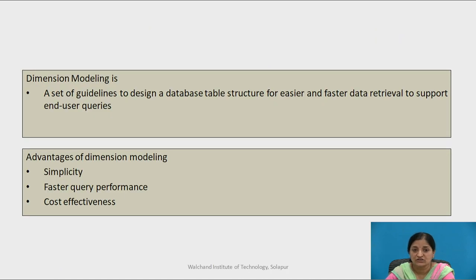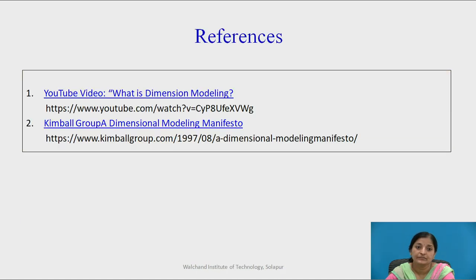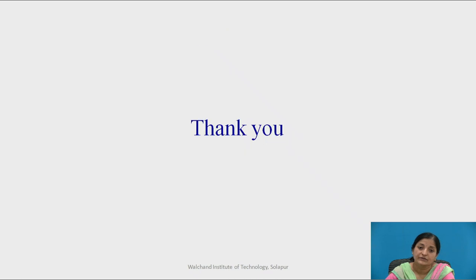To summarize this session: dimension modeling is a set of guidelines to design a database table structure for easier and faster data retrieval to support end user queries. It is a logical design technique for data warehouses. The advantages of dimensional modeling are its simplicity, faster query performance, and cost effectiveness. Dimensional modeling is made for end users. Thank you.